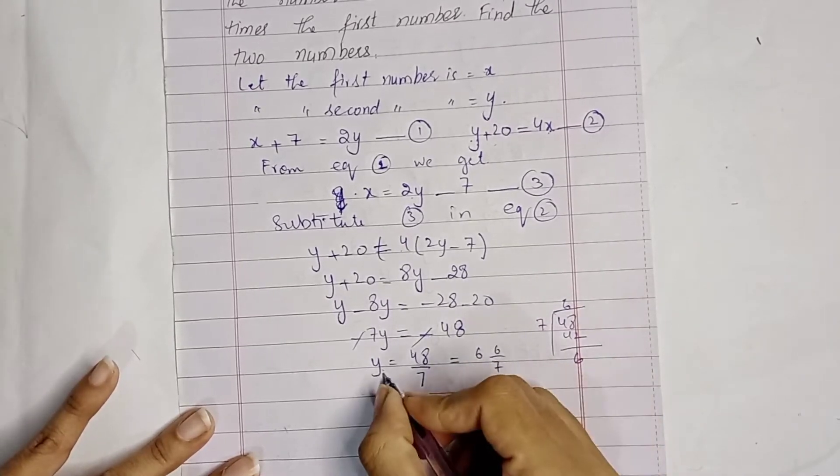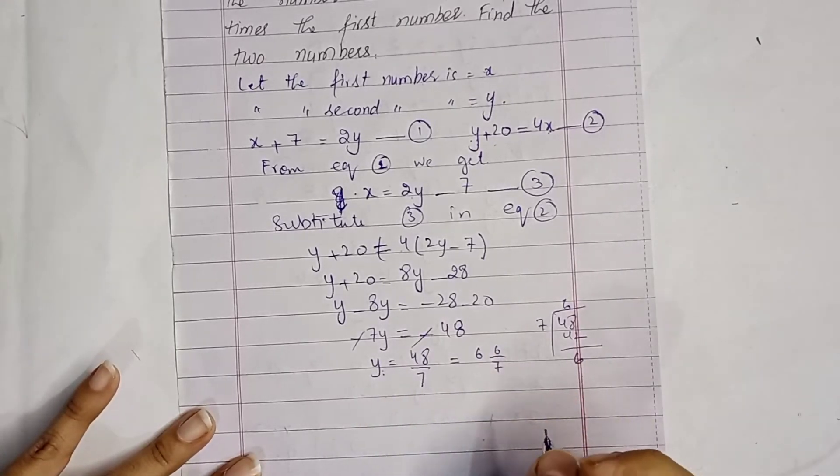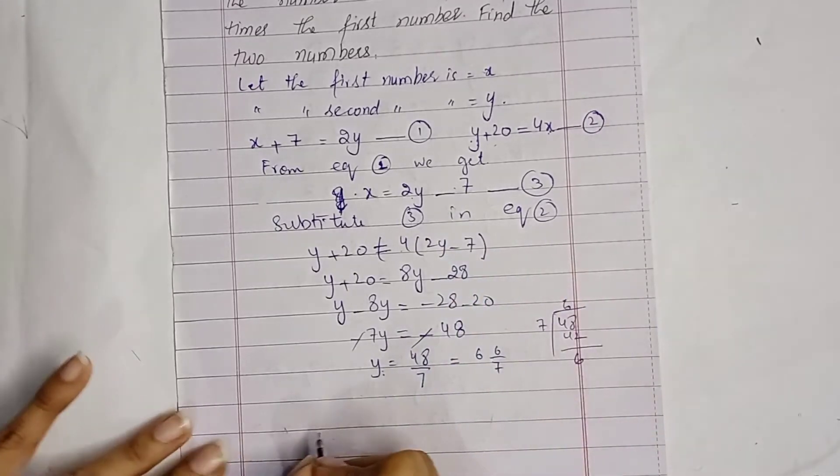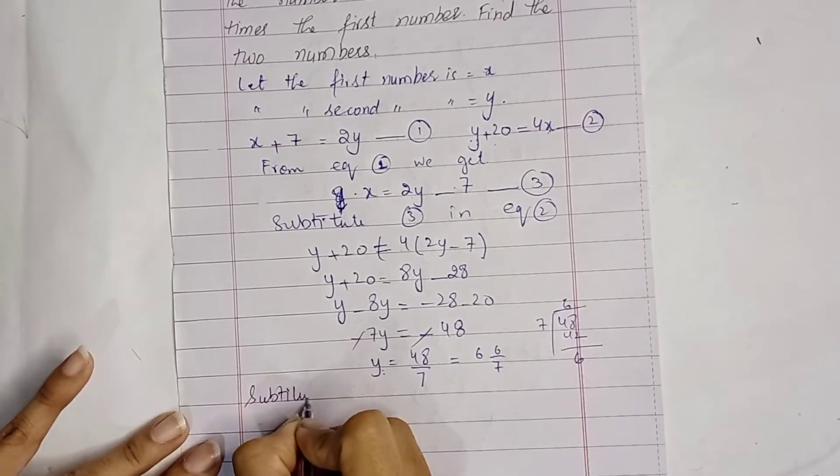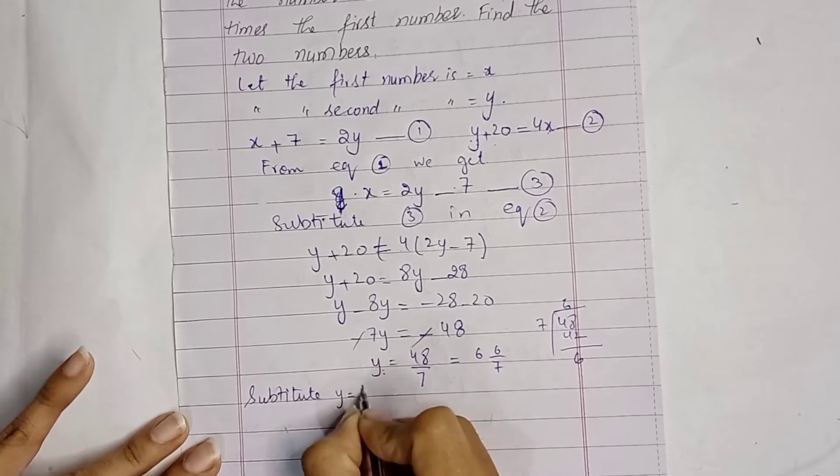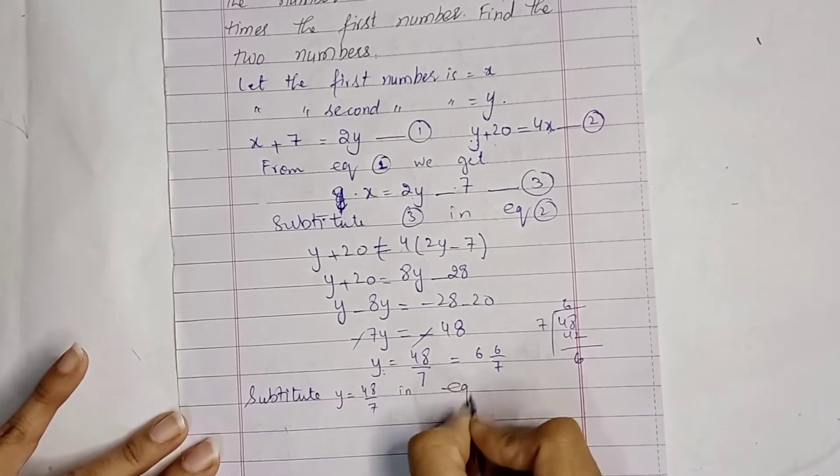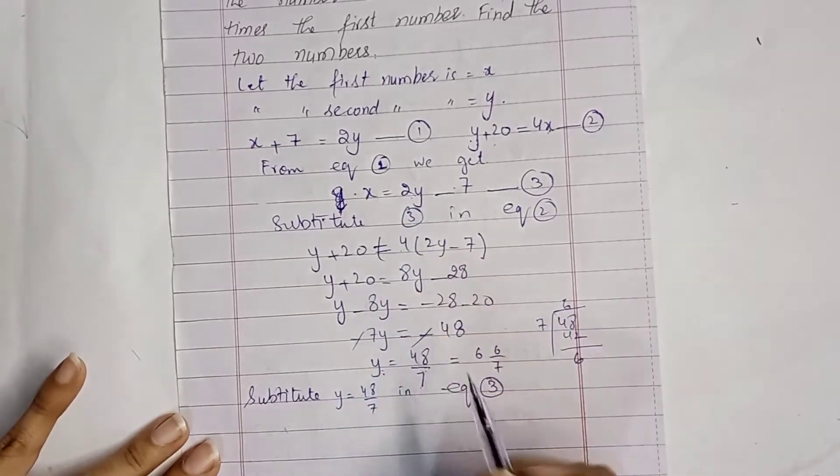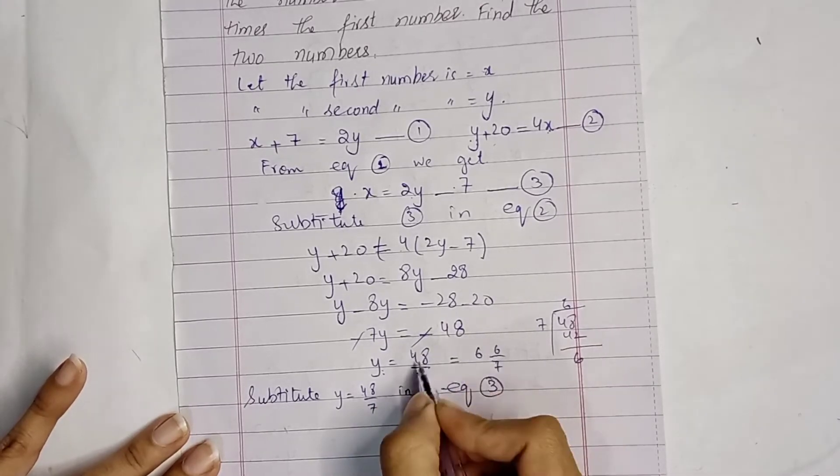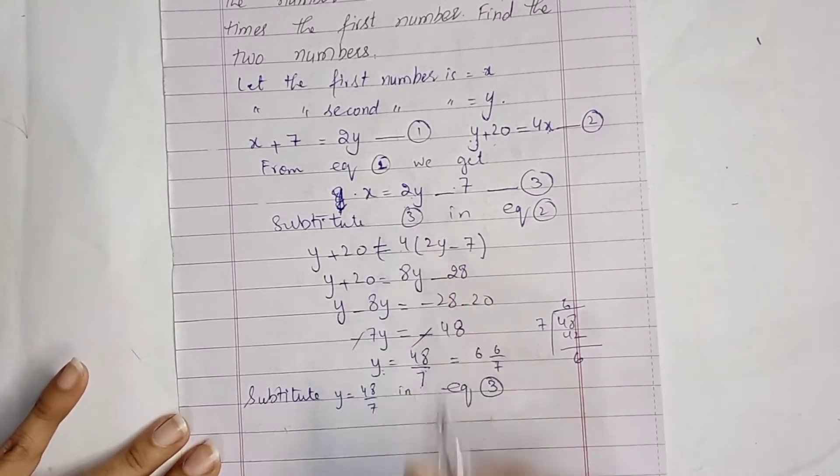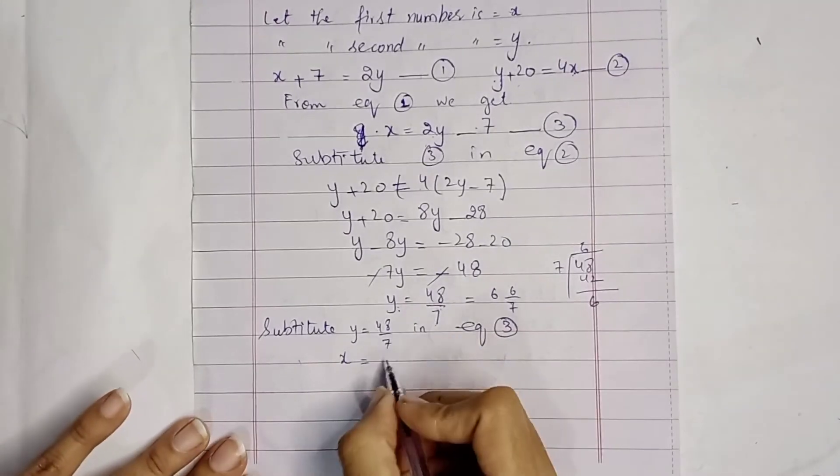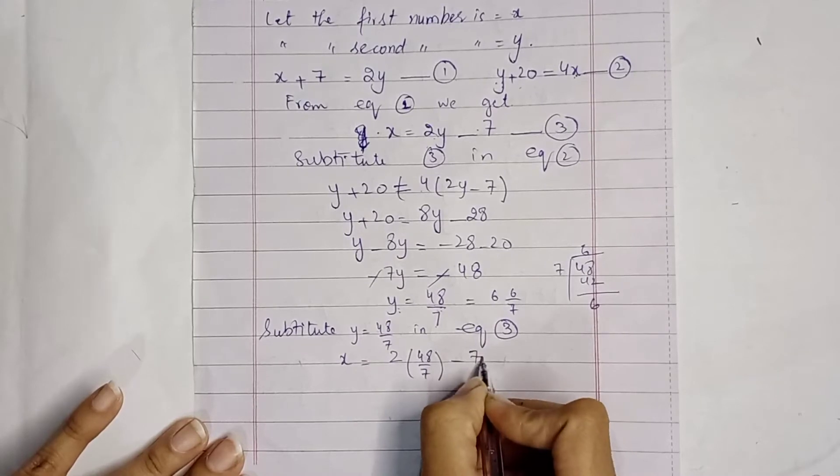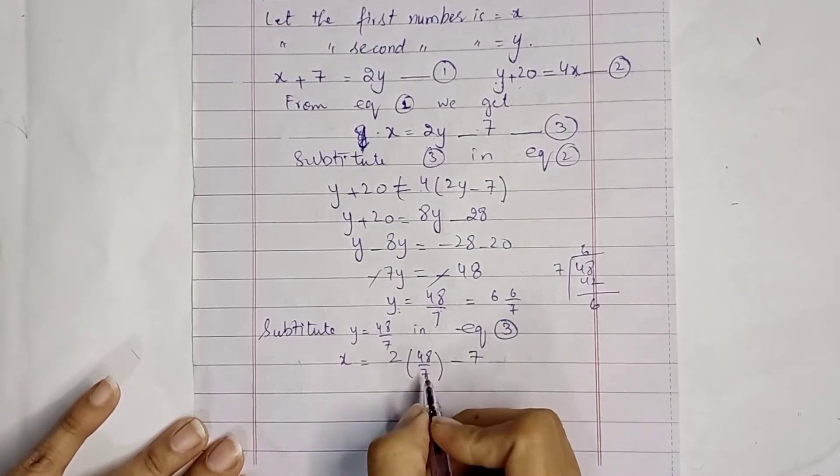Now substitute y equals 48 by 7 in equation 3. x equals 2 times 48 by 7 minus 7.